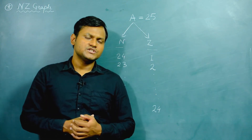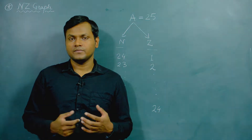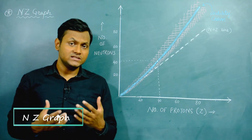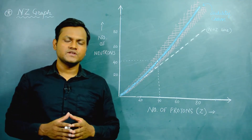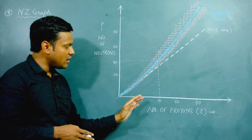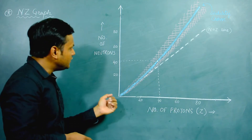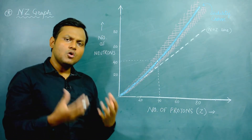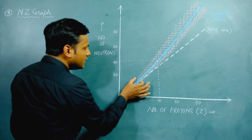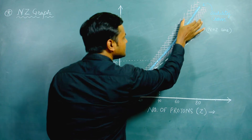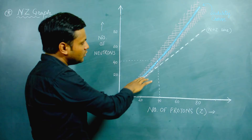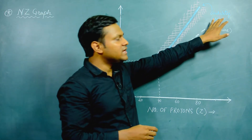The answer leads us to what is known as the NZ graph. The NZ graph is a graphical representation of all the nuclear species that exist in nature and the combinations of neutrons and protons inside them. On a graph where the x-axis has the number of protons and the y-axis has the number of neutrons, almost all nuclear species fall within a particular region known as the NZ graph. The center of this region is known as the stability curve.